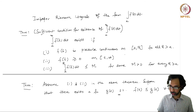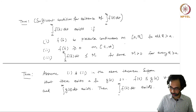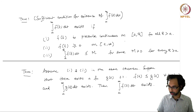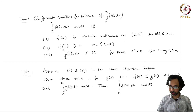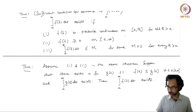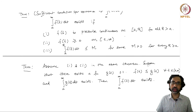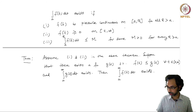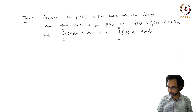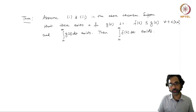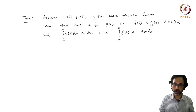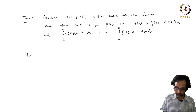This is a kind of comparison theorem where you have two functions, and knowing that the improper Riemann integral of the larger function g exists means the improper Riemann integral of the smaller function f is also finite and exists. These are two sufficient conditions that can be used to check whether some integrals exist as improper Riemann integrals.